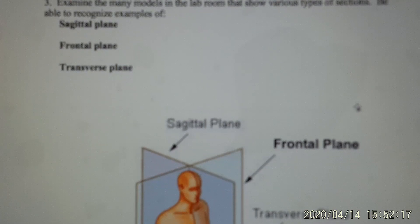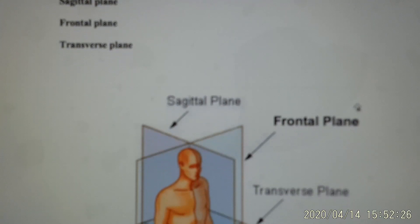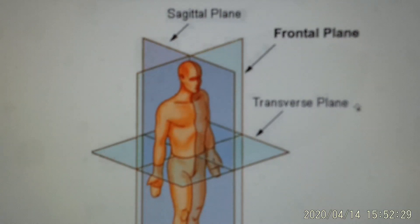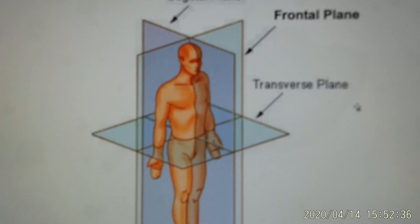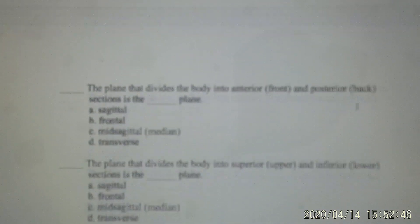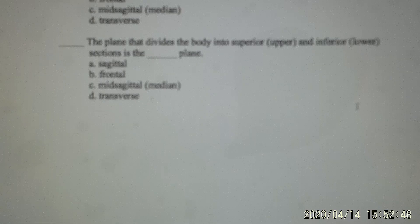The last activity is to be familiar with anatomical planes. There are three planes: sagittal, frontal, and transverse. These three planes are perpendicular to each other — all at 90 degrees. Given a diagram of a plane, you choose the correct term: transverse, sagittal, or frontal. There are some practice questions for this activity as well. Thank you.